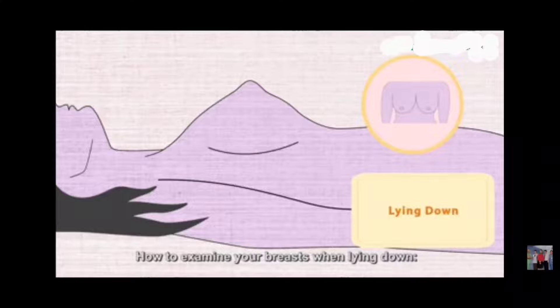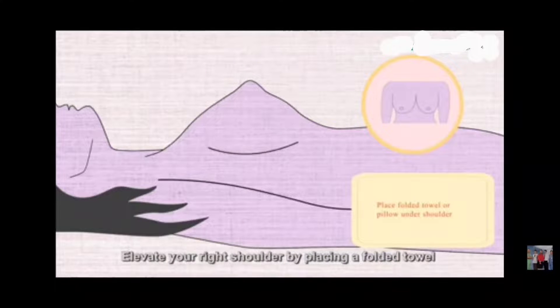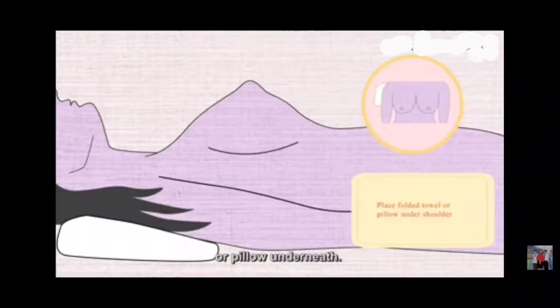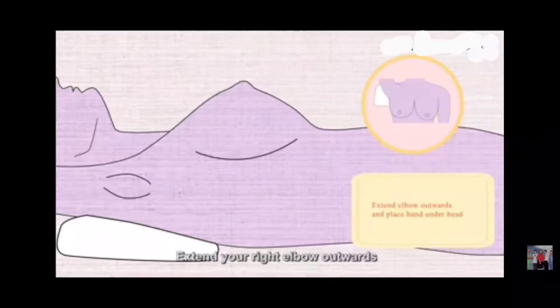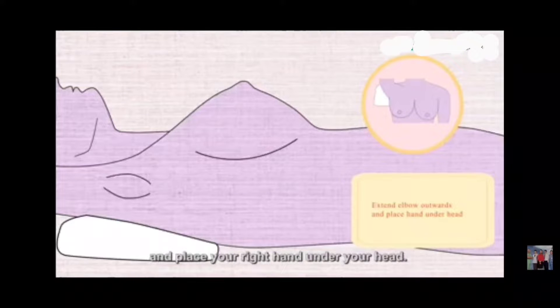How to examine your breast when lying down: elevate your right shoulder while placing a folded towel or pillow underneath. Extend your right elbow outward and place your right hand under your head.